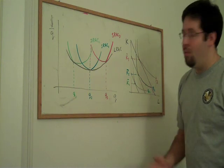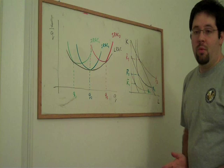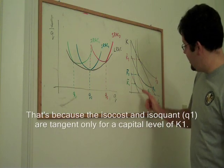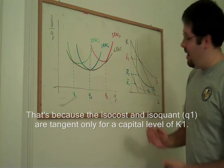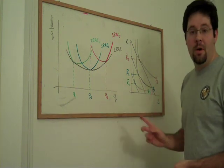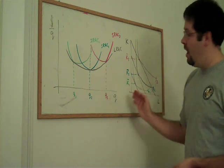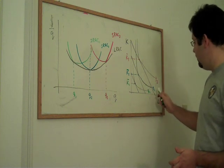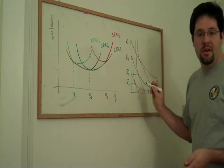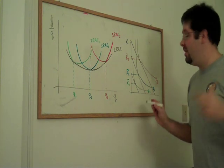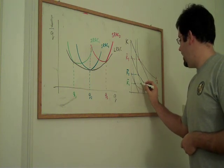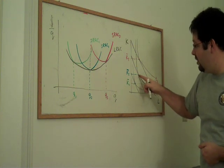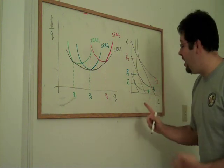And as a result, the only point at which we would be using the optimal input bundle is when we have K1 and whatever amount of labor got us to this tangency. Otherwise, we would have a sub-optimal input bundle because we couldn't adjust K. All we could do is adjust L. So for example, if we wanted to produce Q2, what we would have to do is we would have to keep the capital level fixed and go over here to Q2. We couldn't go to this tangency even though we want to.